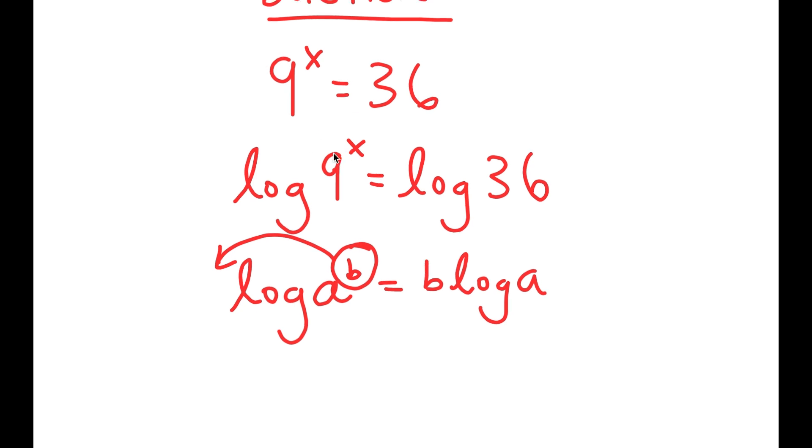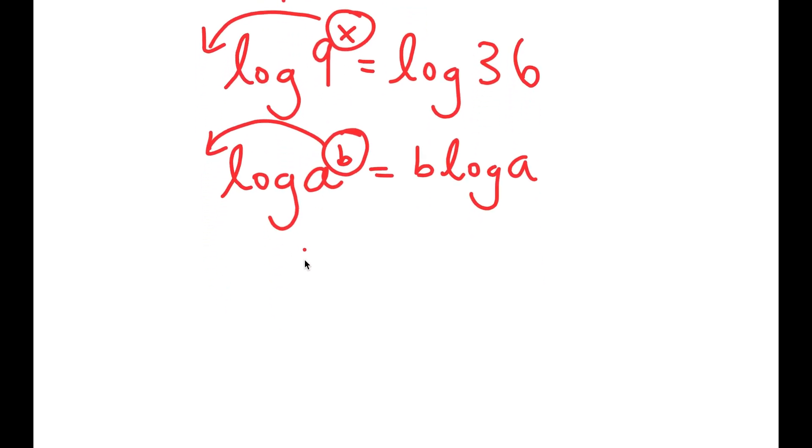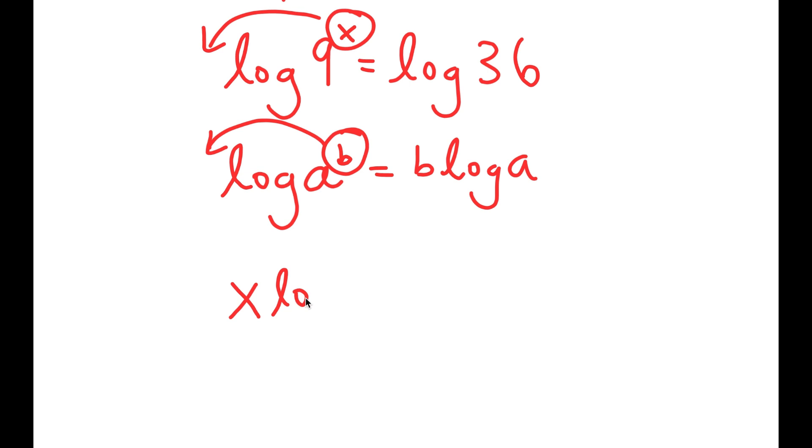So before, x was an exponent, and it's almost impossible to solve the equation just in the form x is. But now, we can move x to the front and make it equal to a whole number, and now it's much easier to solve for x. So now I get x times log 9 is equal to log 36.